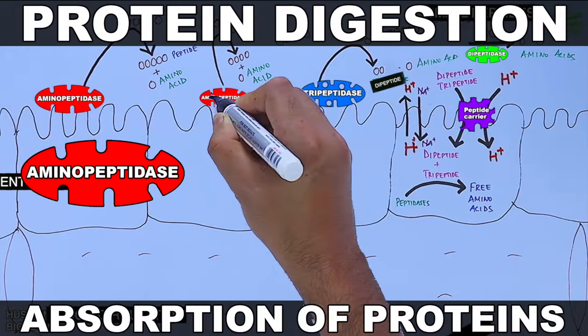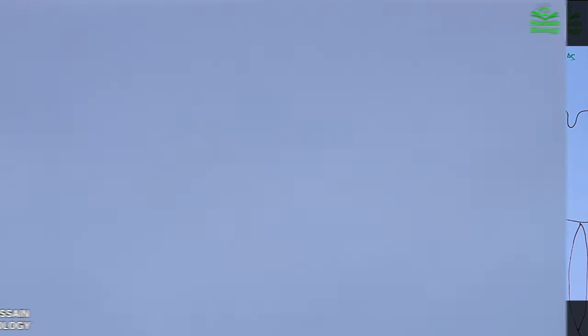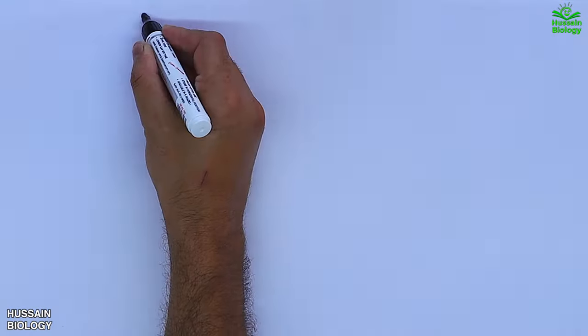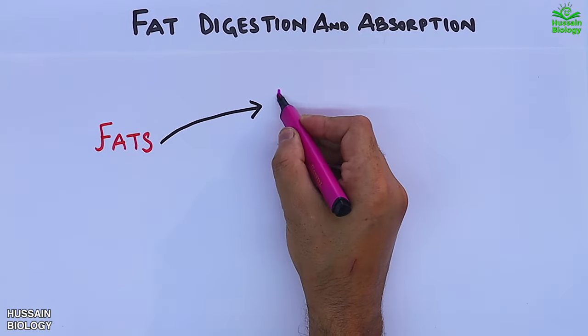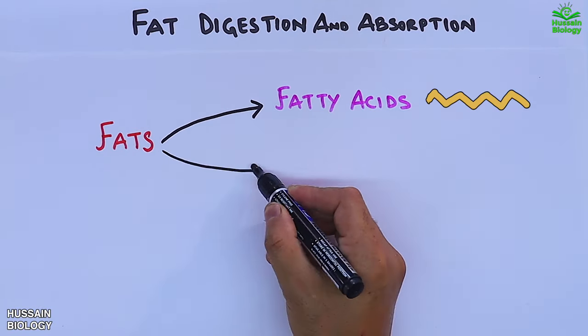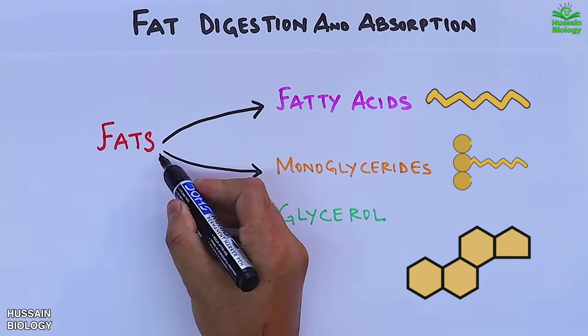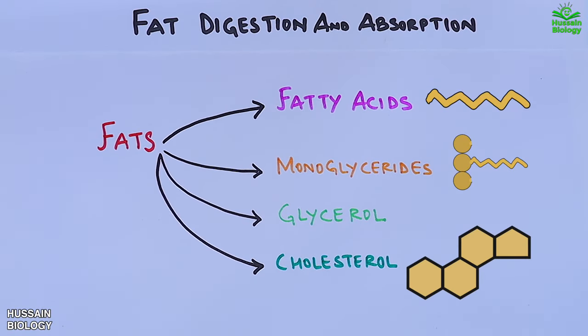In the previous video we discussed about the protein digestion and absorption. Now here we are going to discuss about the fat digestion and absorption. In this process, fats are converted into fatty acids, monoglycerides, glycerol, and cholesterol, and then these simpler molecules are easily absorbed.